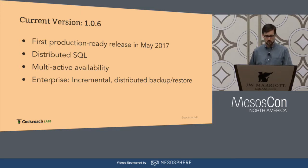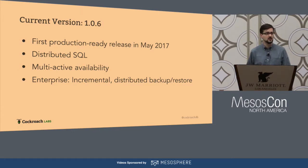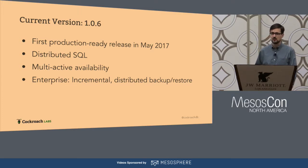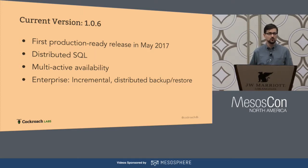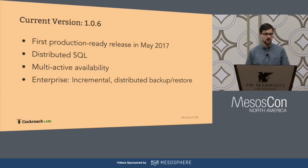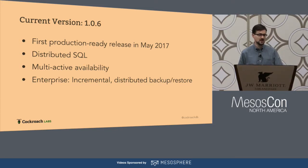Our 1.0 version provided all the core benefits of CockroachDB — distributed SQL and multi-active availability. It also comes in both an open source and an enterprise edition. In the enterprise edition the first feature is distributed and incremental backup and restore. We do have a backup option for the open source edition using a SQL dump format which produces a file full of INSERT statements that can recreate your data, but the enterprise edition has an implementation of backup and restore that is much faster on both the backup and restore sides.